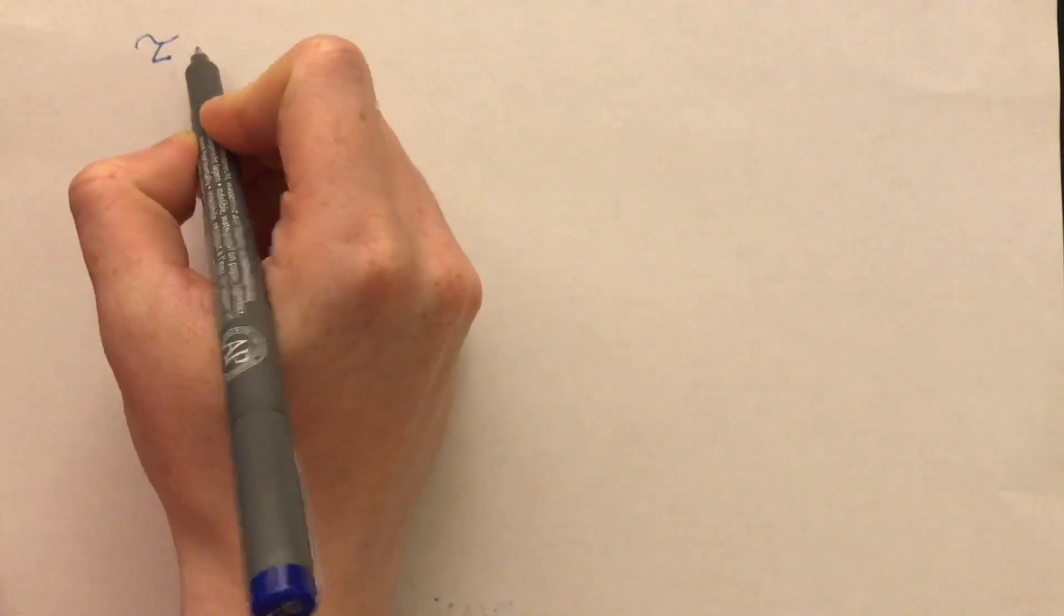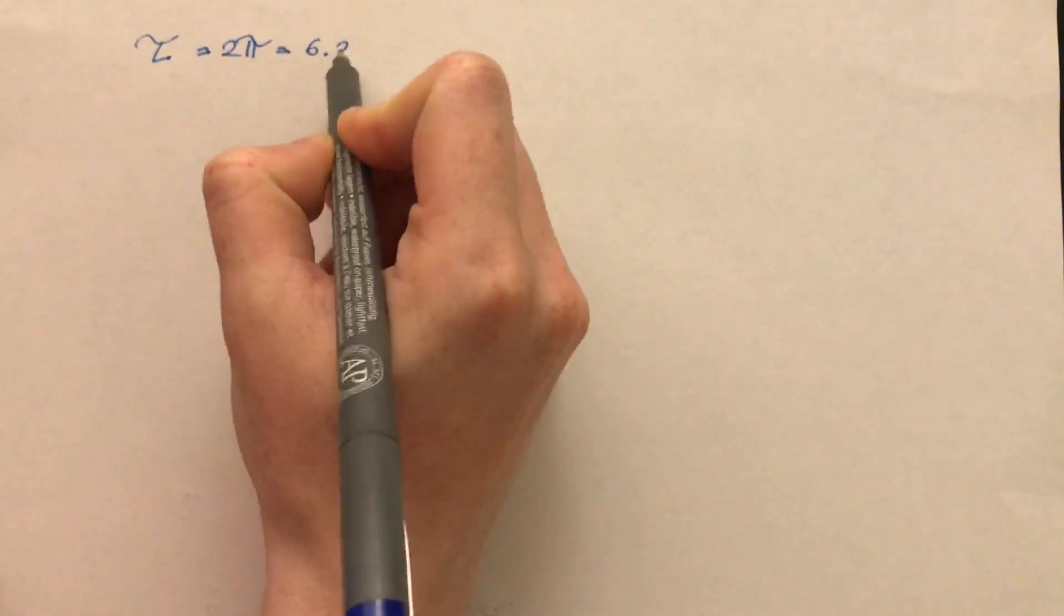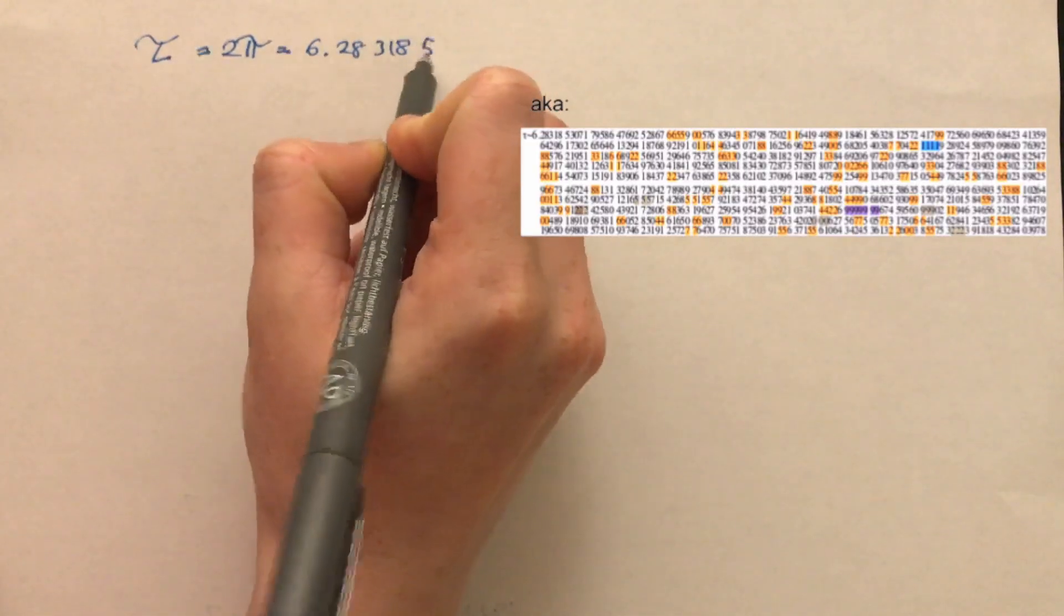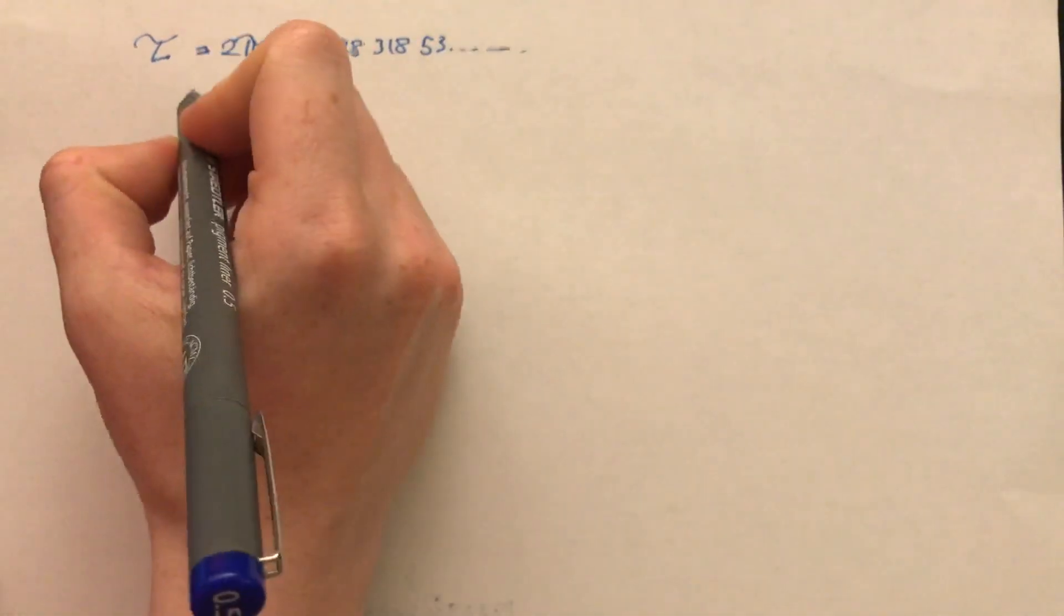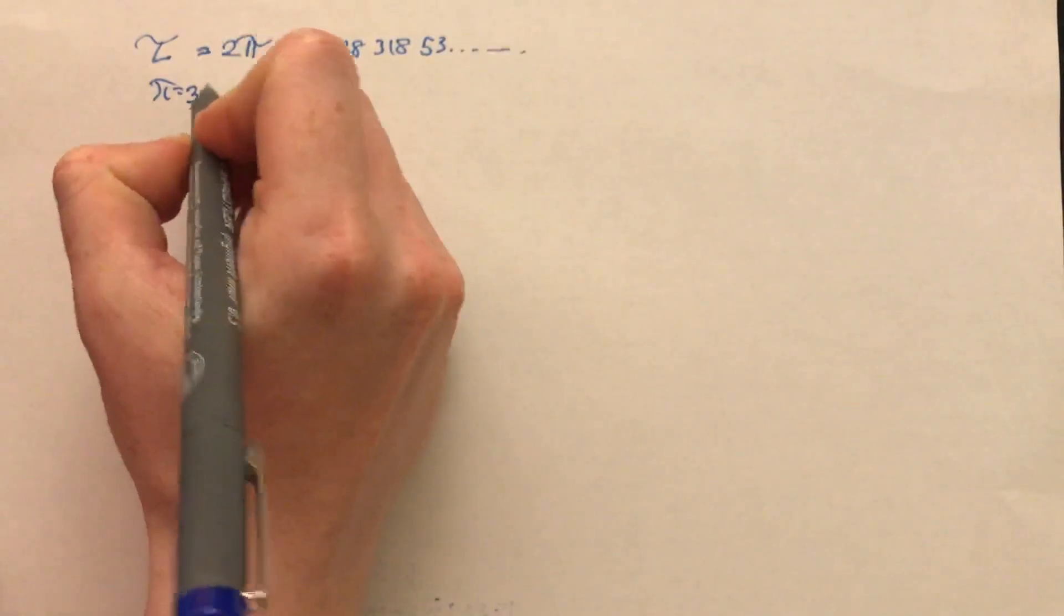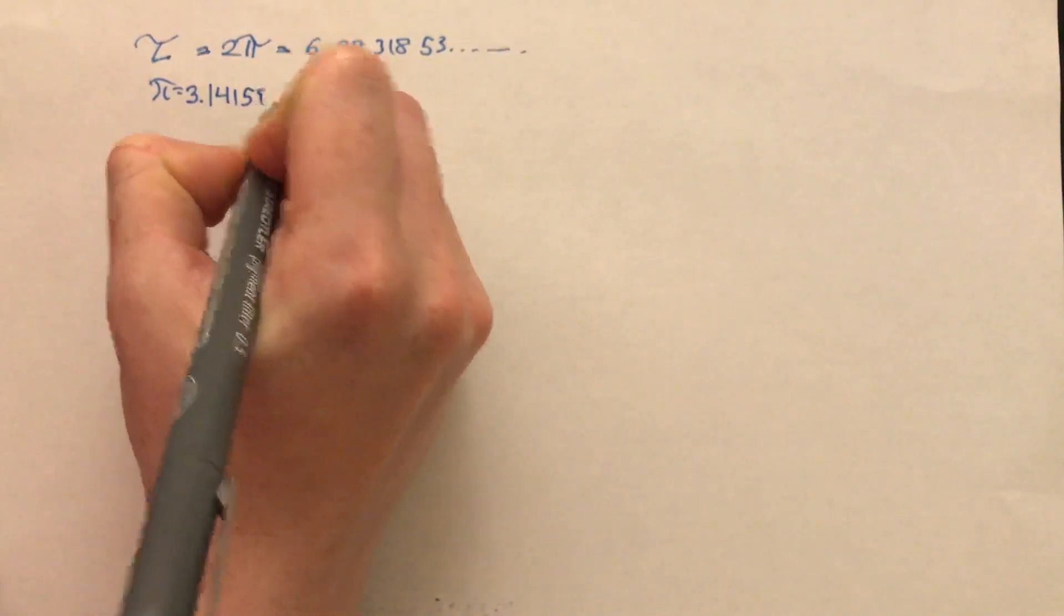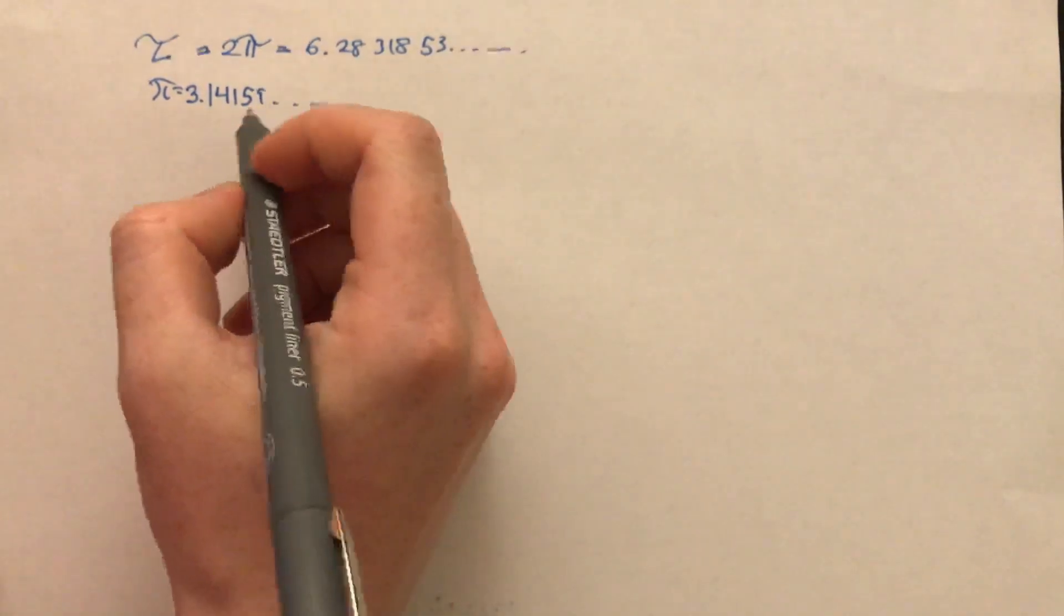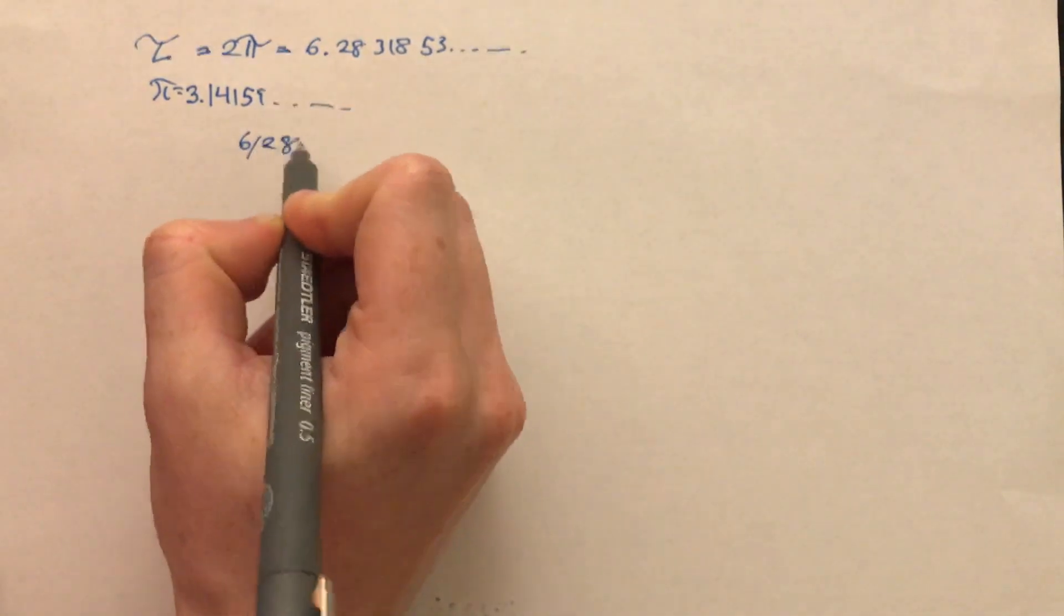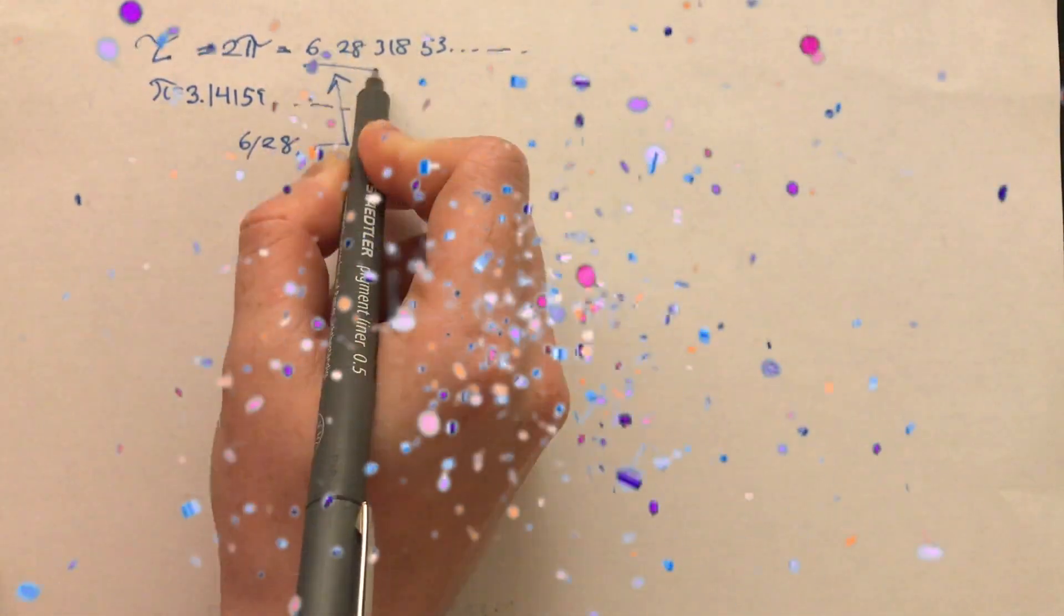Tau is a mathematical constant, and it's equal to 2 pi, which means that it is equal to 6.2831853. It's irrational, but pi is actually equal to 3.14159, and so it's just double. And because today is June 28th, we call it tau day.